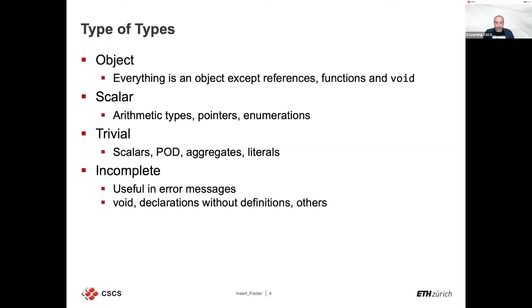You have trivial types, which include scalar types, simple POD types, and aggregates. Then there are incomplete types — types that are not fully formed yet, like a class without its template arguments, or declarations without definitions. They're not finished yet. This is useful when you see a compiler error saying 'incomplete type' — it means the compiler found the declaration of the function but not the definition, giving you a hint of where to look for the bug.